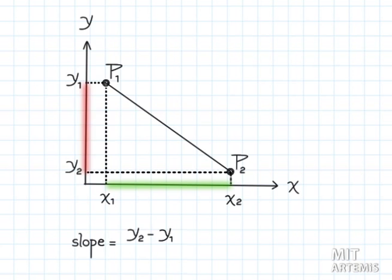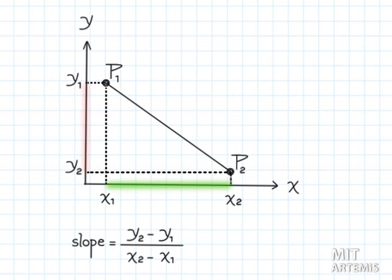As the ski jumper goes down the inrun, the vertical displacement is negative and the horizontal displacement is positive. Therefore, the slope is negative.